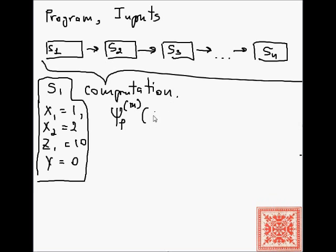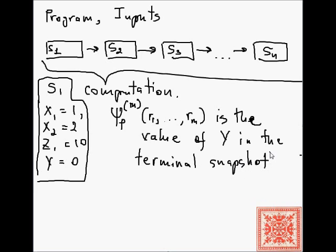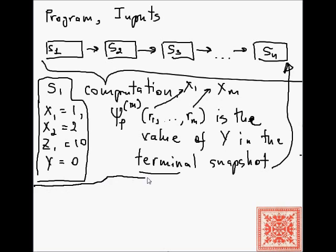In the terminal snapshot, the instruction counter equals one plus the number of instructions in the program. The notation ψ_P^m(r_1, ..., r_m) is the value of the variable Y — the output variable — in the terminal snapshot. Here P is the program, r_1 through r_m are the values of the inputs x_1 through x_m, and m is the number of arguments of the program.